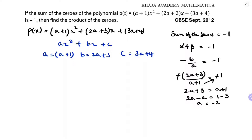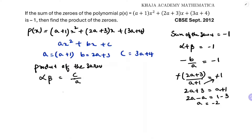So a is minus 2. Now I need to find the product of the zeros. Product of zeros is alpha times beta, which equals c by a. The value of c is (3a+4) and the value of a is (a+1). Substituting a equals minus 2: (3 × minus 2 + 4) divided by (minus 2 + 1).